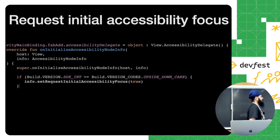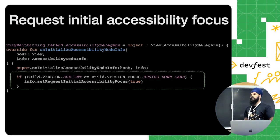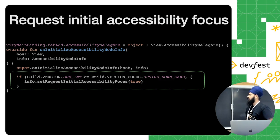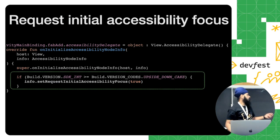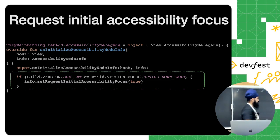Next, setting the initial accessibility focus. If you're developing UIs with a list of components and also a FAB button, you might want to change how the system processes the initial focus. By default it will be on the list view and it's really hard to get focus on the FAB button. Starting with Android 14, you can change the initial focus using the accessibility delegate — using `requestInitialAccessibilityFocus`.